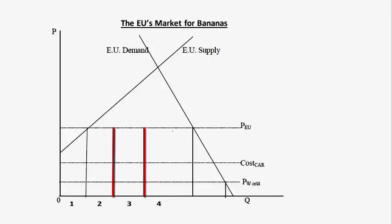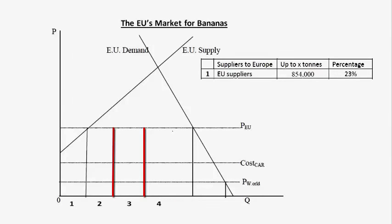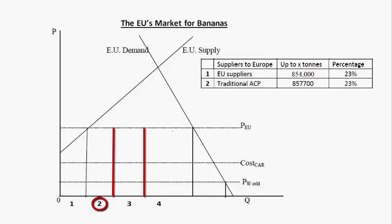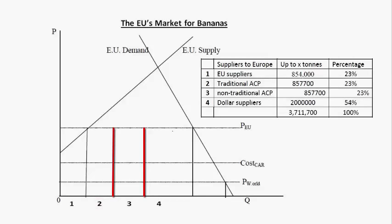The numbers given in the analysis are 854,000 tons from the European suppliers, 857.7 thousand tons from traditional ACP suppliers, and thereafter we have what are called third countries or dollar countries. These dollar countries would produce up to two million tons. They were actually sharing this, with duty-free access for non-traditional ACP countries and a tariff for the dollar countries.